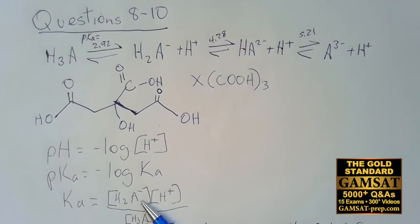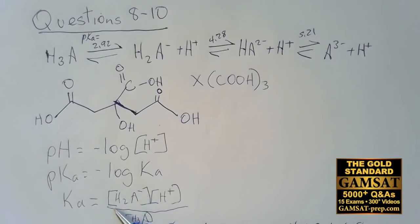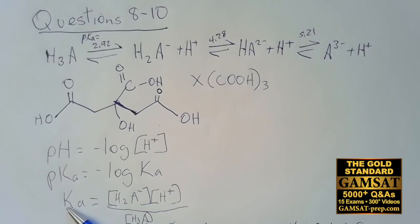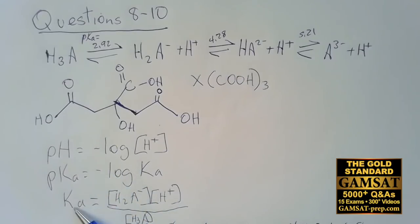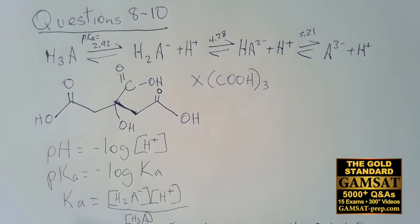Since the proportion of the deprotonated species increases, that species is in the numerator of Ka, so Ka must increase. If Ka increases, because Ka and pKa are opposites due to the negative sign, pKa must decrease. So the answer for question 10 is B.